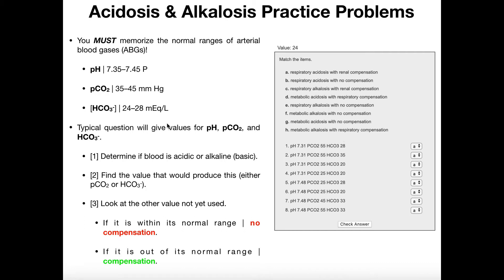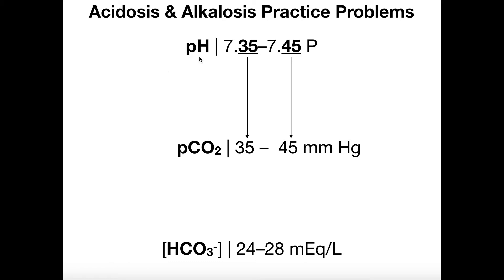I want to show you a trick for learning the pCO2 range. The pH range, 7.35 to 7.45, you absolutely need to have memorized — say it out loud over and over again, because you'll use it throughout your career. What's nice is that the pCO2 range is just the two numbers after the decimal point in each pH value: 35 and 45. That happens completely by coincidence, so that's kind of nice.